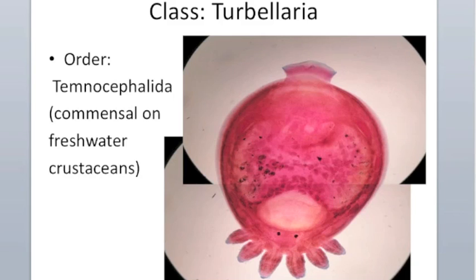In order to be commensal, you need to be able to find a host — a difficult task when you're a small organism in a big environment — and you need to be able to hold on to your host, which can also be difficult in aquatic environments where a current or a fast-moving host could knock you off. In the temnocephalida, you see the beginning of structures for holding on: tentacles at one end and an adhesive disc at the other. These organisms can move leech-like across their host.